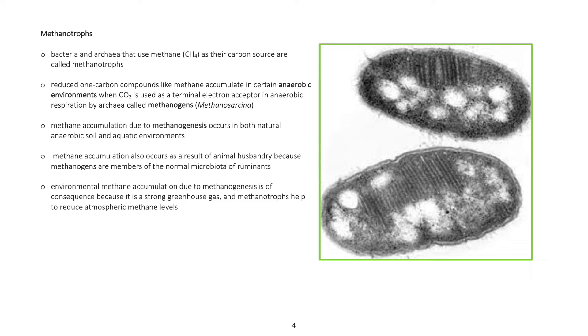Methanotrophs: Bacteria and archaea that use methane as their carbon source are called methanotrophs. Reduced 1-carbon compounds like methane accumulate in certain anaerobic environments.